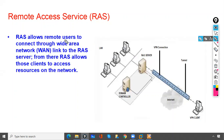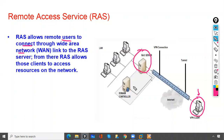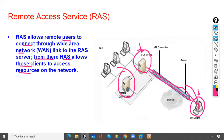RAS allows remote users to connect through a wide area network. Let's say you are at home and you want to access your lab or the servers of your network — this RAS server allows you to access them remotely over the internet. From there, RAS allows those clients to access resources on your network: the domain controller, servers, printers, and other PCs.